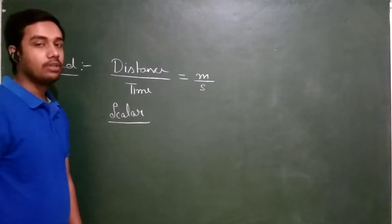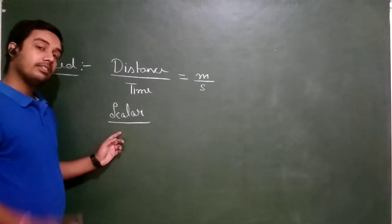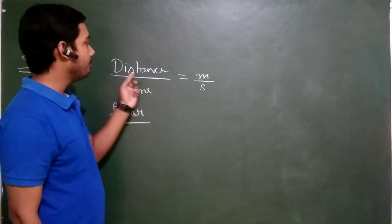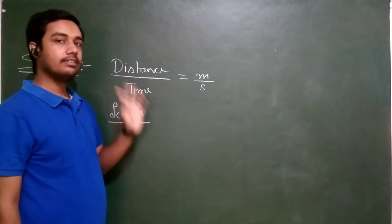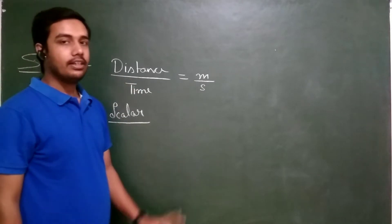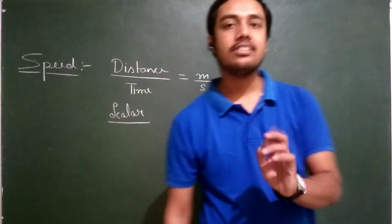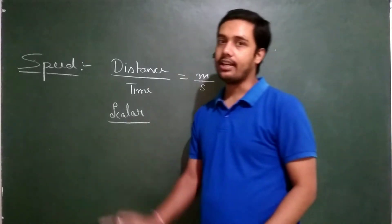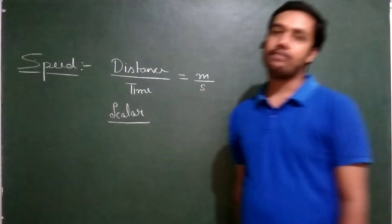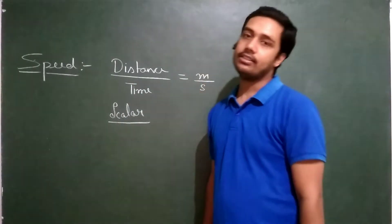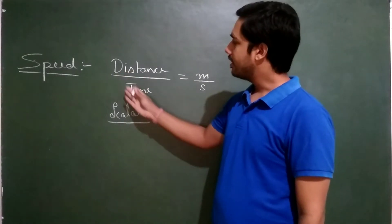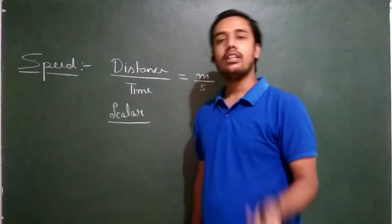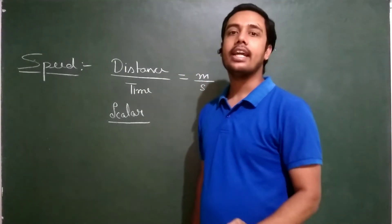Speed is also a scalar quantity. If the object has moved, distance cannot be zero — the same thing goes with speed. If I am moving, I will have some speed; my speed cannot be zero.